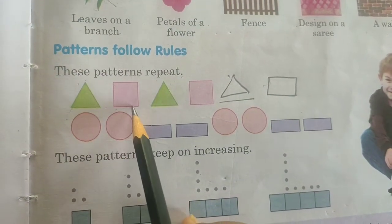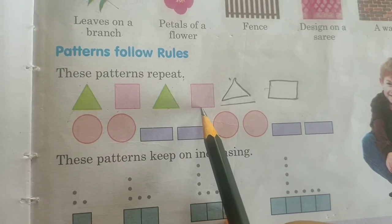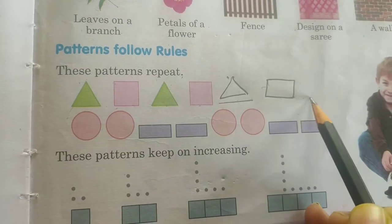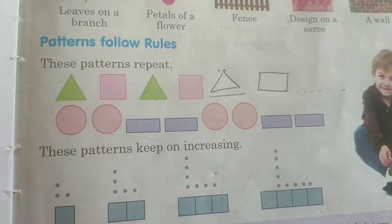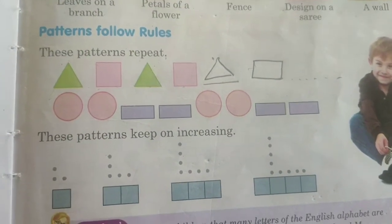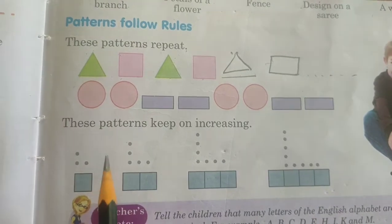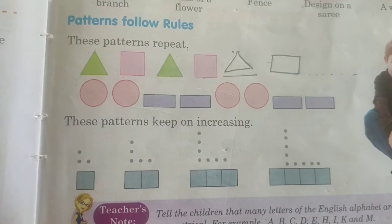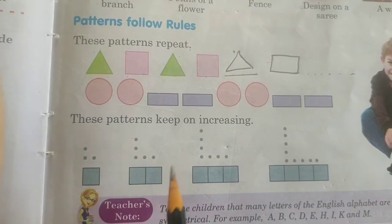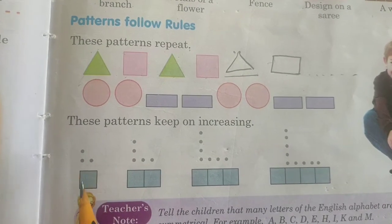One triangle, square. Triangle, square. Triangle, square. So it goes on repeating. So this is a repeating pattern. Now see, observe this example. This pattern keeps on, it goes on increasing the dots and also a square.